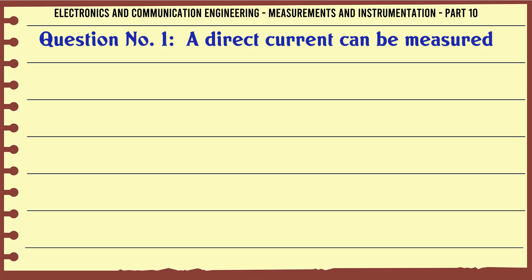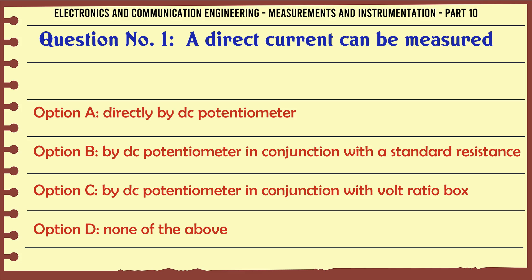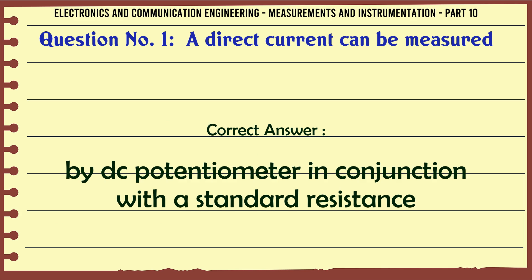A direct current can be measured: A) directly by DC potentiometer, B) by DC potentiometer in conjunction with a standard resistance, C) by DC potentiometer in conjunction with volt ratio box, D) none of the above. The correct answer is by DC potentiometer in conjunction with a standard resistance.